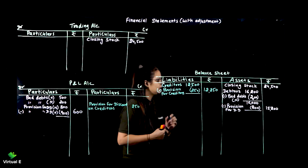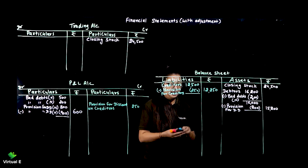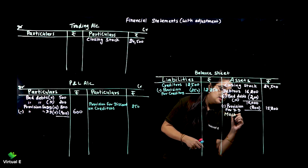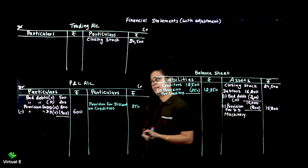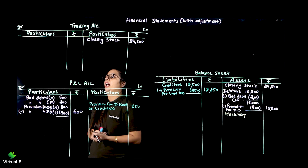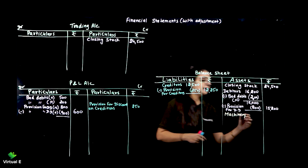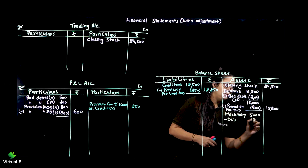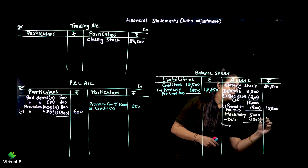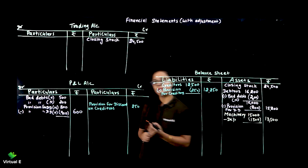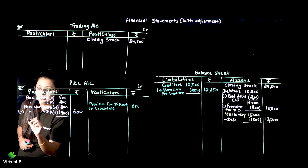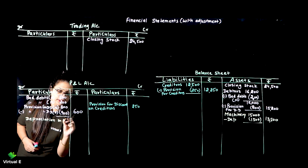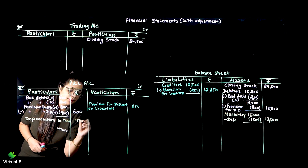Then machinery depreciation - we have to do it again. In profit and loss, depreciation is a loss. Depreciation on machinery is 1,500, so we show 1,500 depreciation.